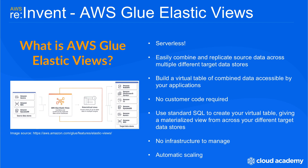So what is AWS Glue Elastic Views? It's a new serverless service which allows you to easily combine and replicate source data across multiple different target data stores, while at the same time manifesting a virtual table of combined data which can then be accessed by your applications. This can all be achieved without having to write any of your own custom code, and this virtual table — giving a materialized view from across your different target data stores — can be easily created using standard SQL. Being a serverless service, you don't have to manage any infrastructure and it scales automatically, keeping the effort and management of the service to a minimum.